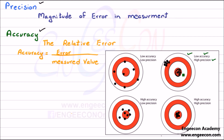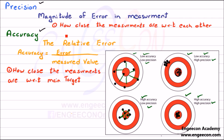But your readings are far away from the main targeted area, so you have low accuracy. In another case, your measurements are much closer to each other, so you have high precision, and your measurements are also close to the main targeted area, so you have high accuracy. In a third case, your readings are much closer to the targeted area, meaning high accuracy, but your readings are far from each other, so you have low precision.